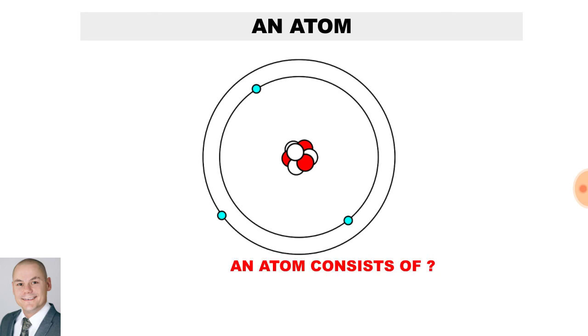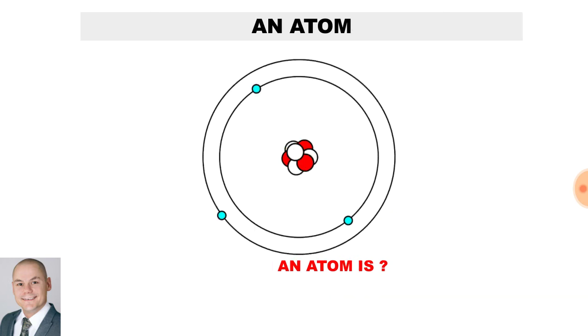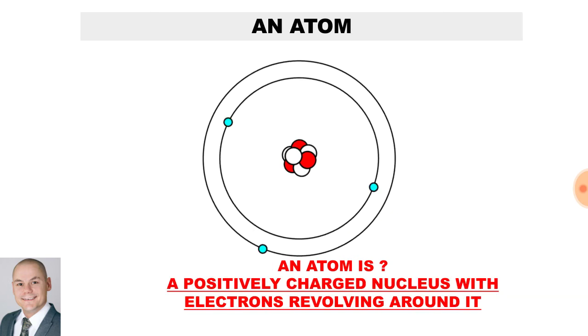What does an atom consist of? It consists of protons and neutrons. An atom is also known as a positively charged nucleus with electrons revolving around it.